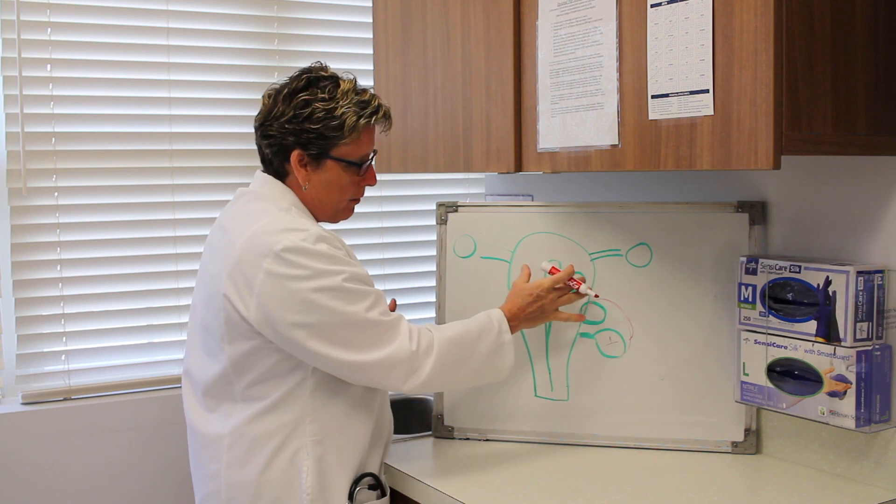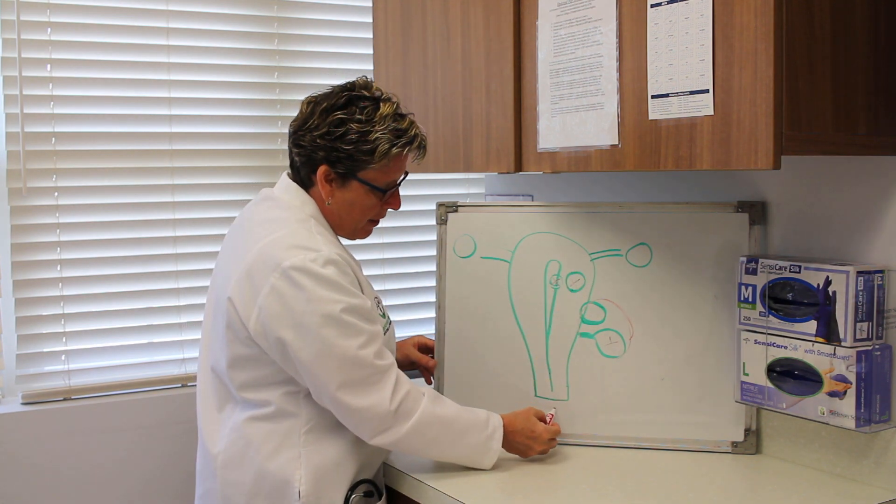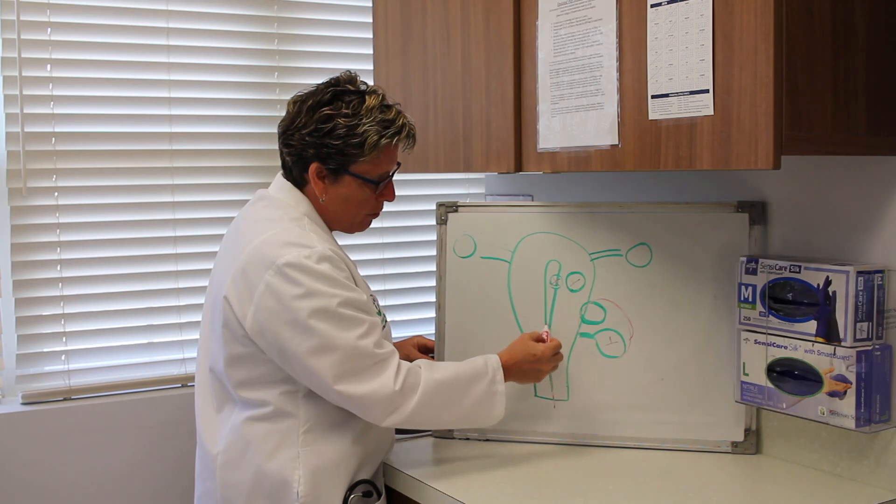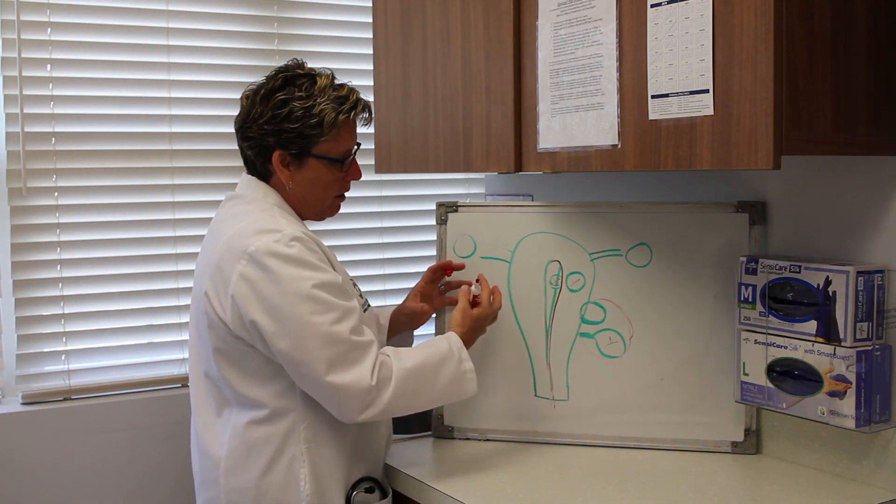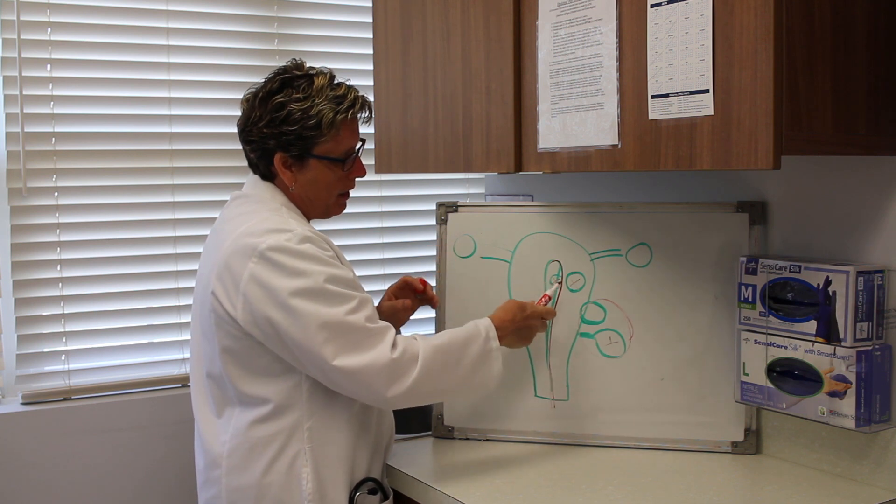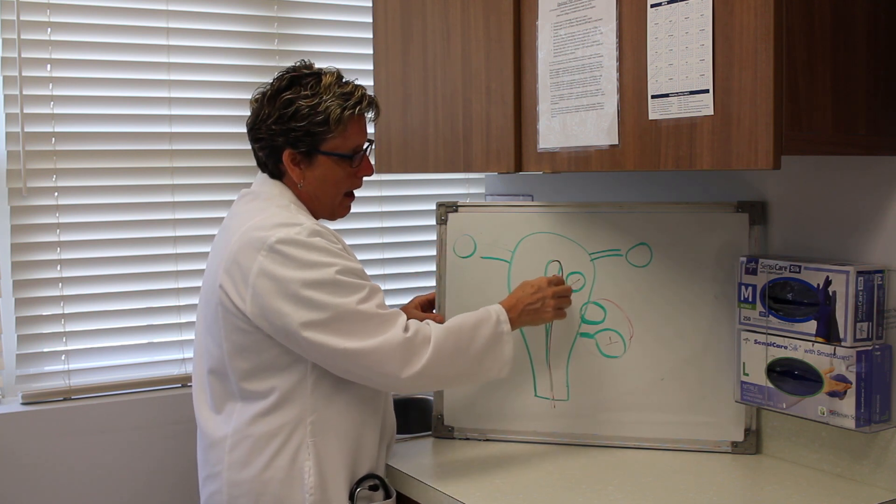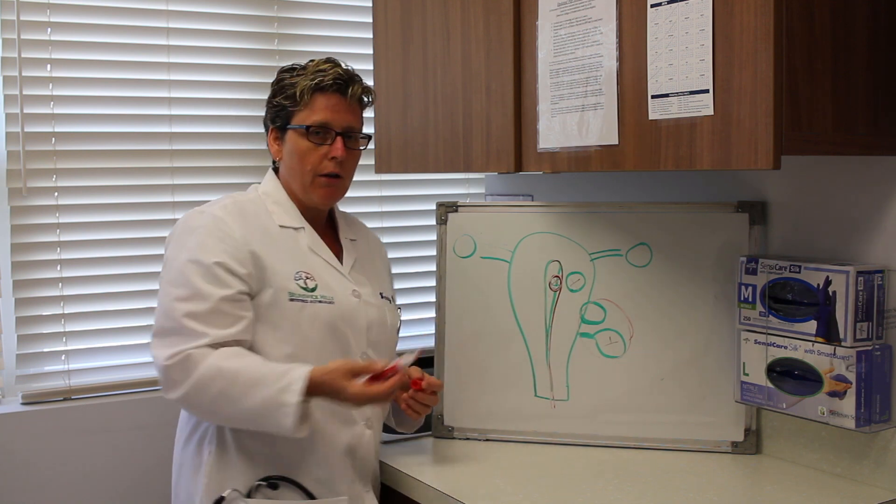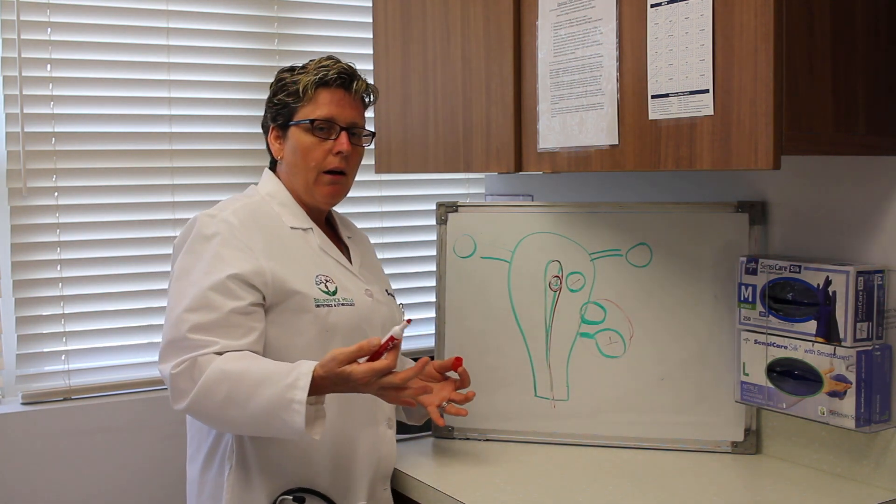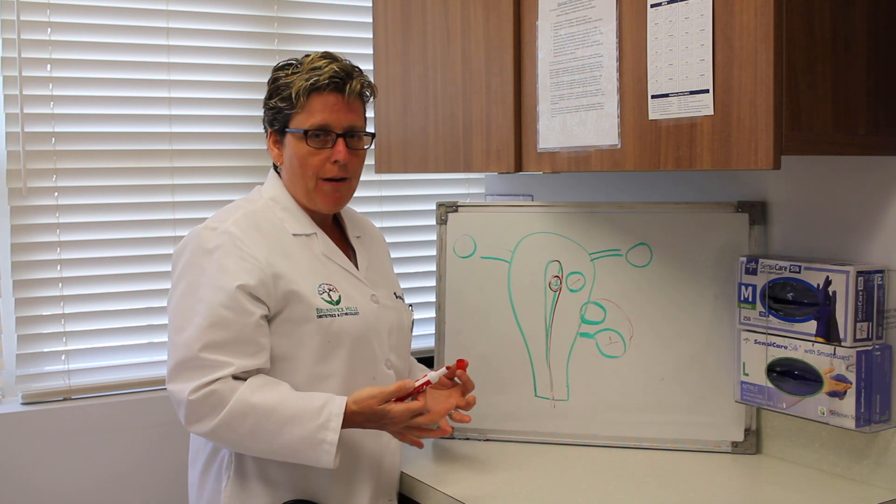It's an ultrasound, but during the ultrasound, a thin catheter is put through the uterus, and fluid is put into the uterine cavity. This fluid expands the cavity, and it's easier to see exactly how much of or whether a fibroid is involved with the lining of the uterus, which is important when we come to treatment of the fibroids.